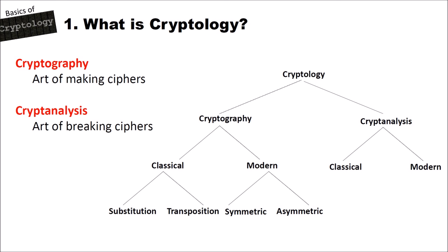Cryptography can be split into classical and modern cryptography. The same can be done with cryptanalysis, which also can be separated into classical cryptanalysis, which was mostly done by hand or maybe with some early machines, and of course modern cryptanalysis, which is done with modern computing techniques. On the left side, classical cryptography can be split into substitution and transposition ciphers, and modern cryptography can be split into symmetric and asymmetric ciphers.